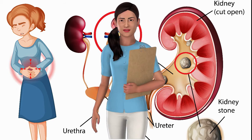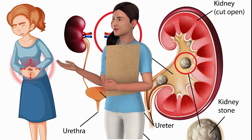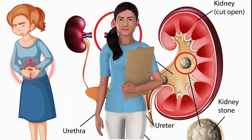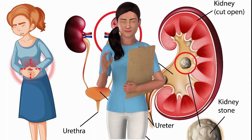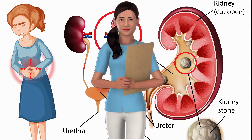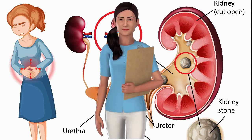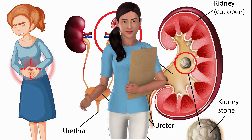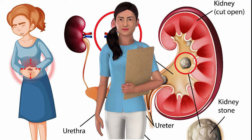Calcium-based kidney stones are the most common type. They are mostly constructed from calcium oxalate and are often caused by high-oxalate foods. You can prevent them by decreasing your consumption of peanuts, potato chips, spinach, and chocolate.